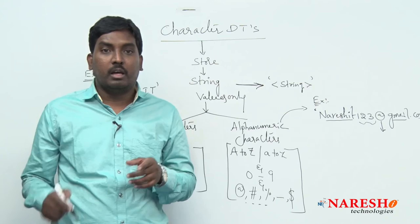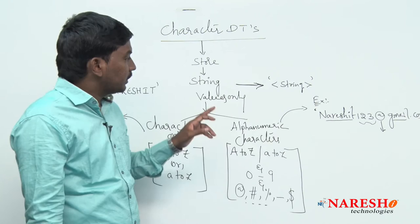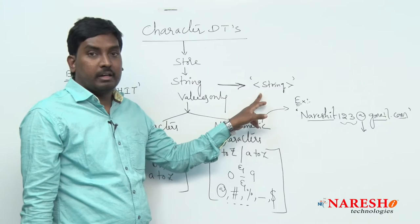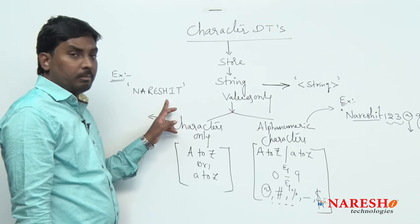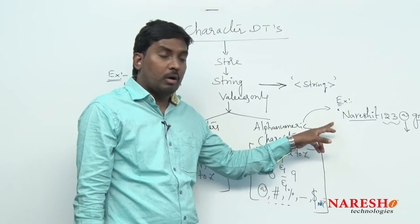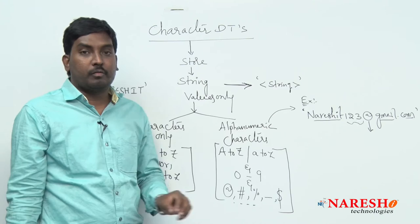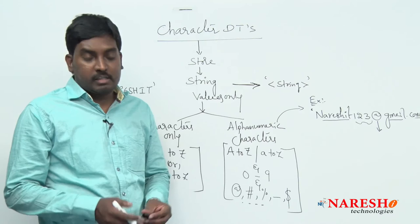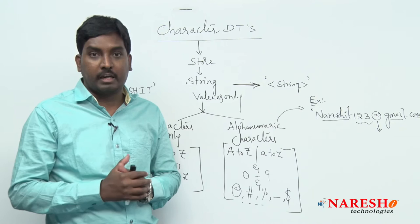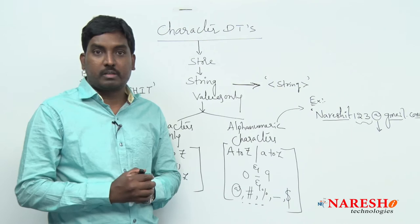Whatever you send — characters or alphanumeric — both expressions must be sent along with single quote representation. This is mandatory. For example, 'Naresh IT' uses single quotes, and 'nareshit123@gmail.com' also uses single quotes. The single quote representation is required for both. This is the character data type definition — its purpose, and what kind of values it stores.